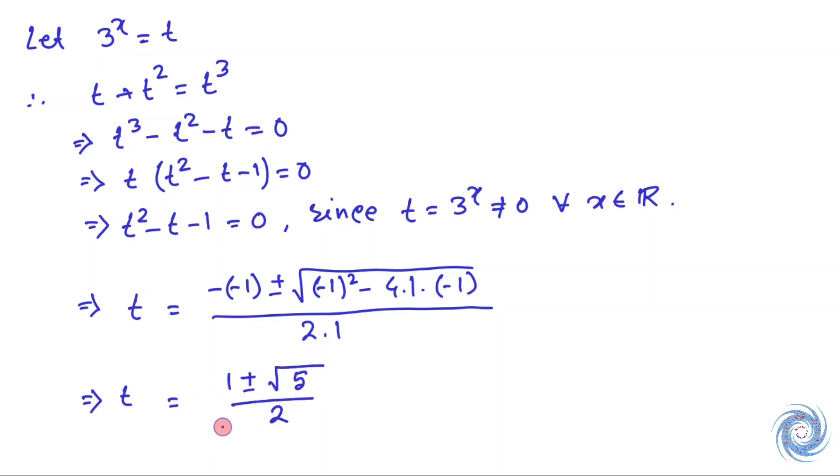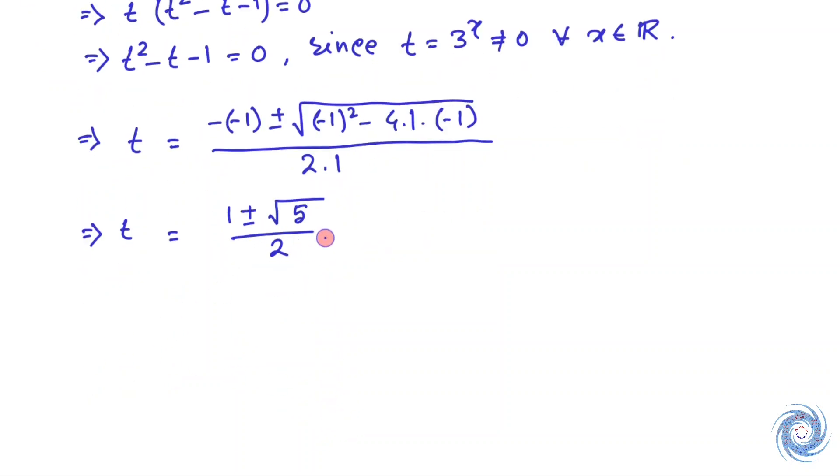This implies t equals one plus or minus square root of 5, whole divided by 2. So first we will take one plus square root of 5 divided by 2. Now replace t by 3 to the power x.